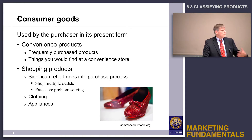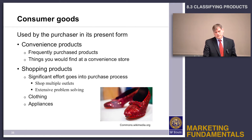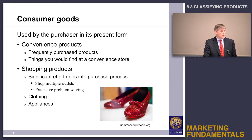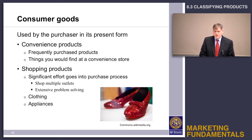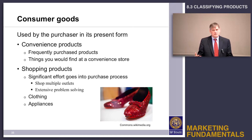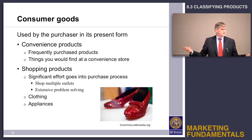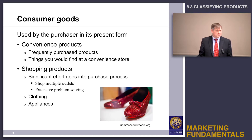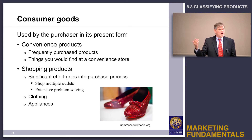Another way of classifying products is consumer goods — products used in their current form. One kind of consumer good is a convenience product. This is something that's purchased frequently and is usually relatively inexpensive.